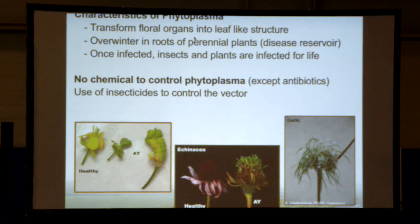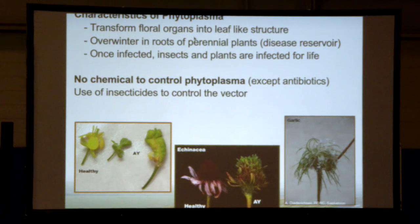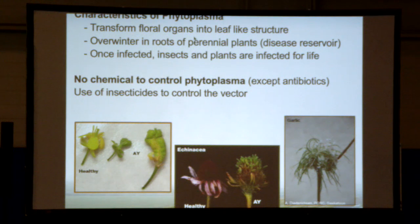What are the characteristics of these phytoplasma? When in the phloem, they modify the expression of genes responsible for flower development, so the plant makes leaves instead of flowers — plants look a lot greener and more lush, which is why symptoms are sometimes not visible until the end of the season. The phytoplasma overwinters in the roots of perennial plants, meaning disease reservoirs can exist in perennial plants all around the crop. When a plant or insect is infected, it is usually infected for life.